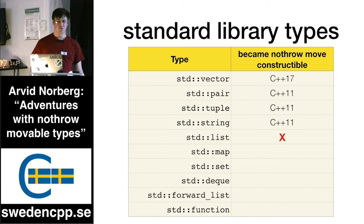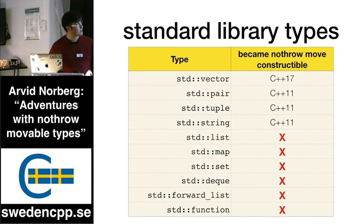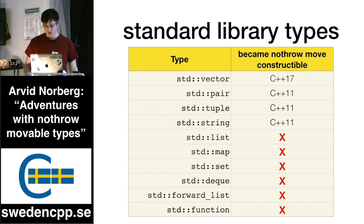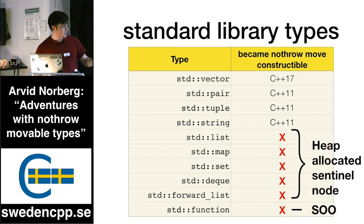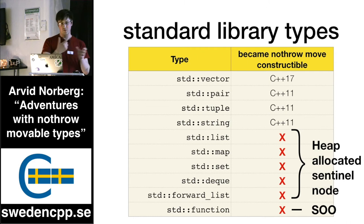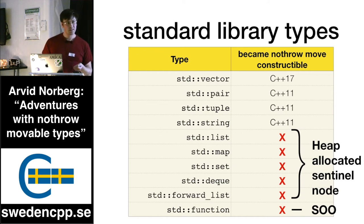List: no. List is not nothrow move constructible. Neither is map. In fact, none of those are nothrow move constructible. You can perhaps see that the trait they have in common is that they are node-based containers. The reason is that some implementations of node-based containers have a heap-allocated sentinel node as part of their linked list structure. And in the case of `std::function`, the reason it's not nothrow move constructible is that it supports small object optimization, in which case you're copying or moving internal types you don't have control over — including lambdas.